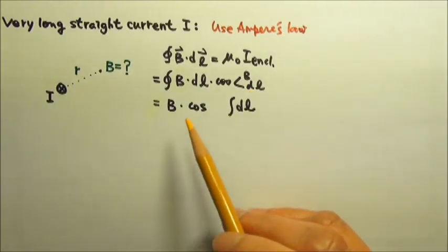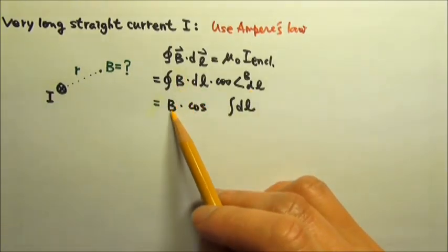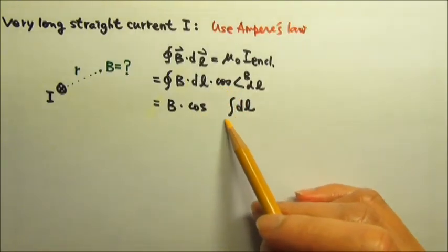This way, we will be able to take out the constant B and the constant cosine, and the integral would only have the integral of dl.